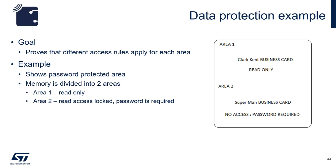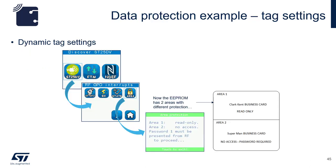We will create two memory areas. Area 1 will be read-only, and area 2 can be read only if a password is presented. Using the ST25DV discovery board, click on the ST25DV icon, and when the menu opens, click on the Area button. Here you can see the two areas: one is read-only and the other has no access unless password 1 is presented.